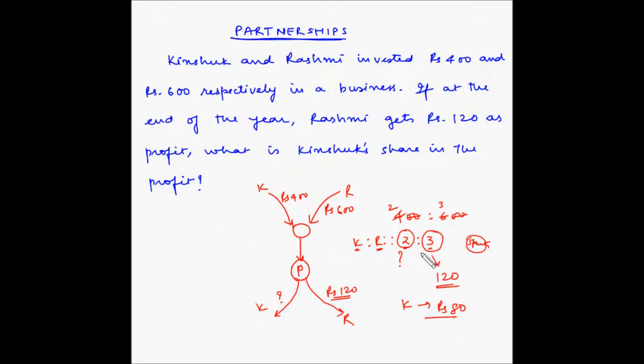Another way of solving this is 3 parts out of 5 of the total profit, let us say which is P, is equal to 120. So, let us solve for P. P is equal to 120 multiplied by 5 divided by 3. 3 1s are 3, 3 4s are 12. So profit is equal to 4 5s are 20 and one more 0, 200 rupees.